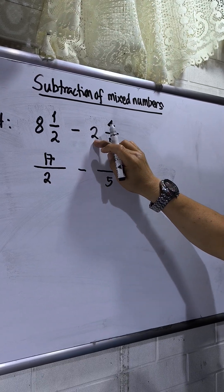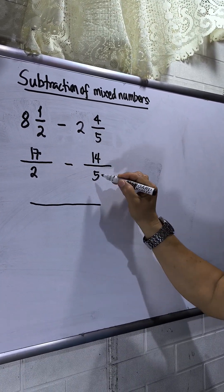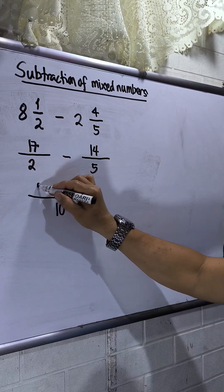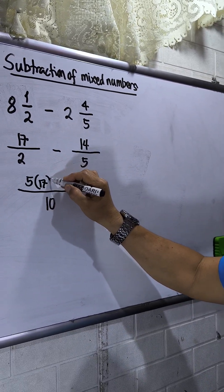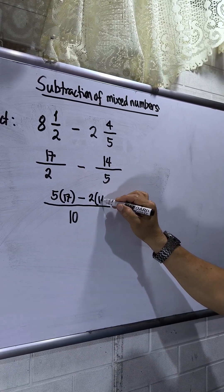Then 5 times 2, that is 10, plus 4, 14. Then the LCD, multiply, that will be 10. 10 divided by 2, that is 5, then multiply by 17. Then 10 divided by 5, that is 2, times 14.